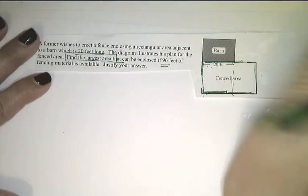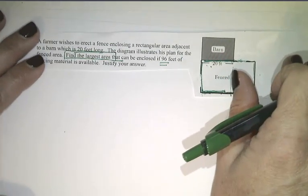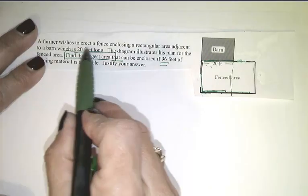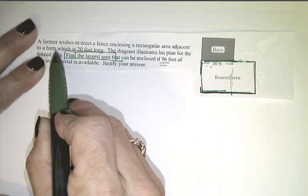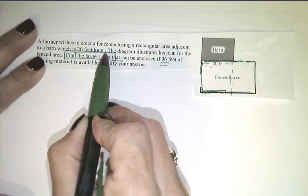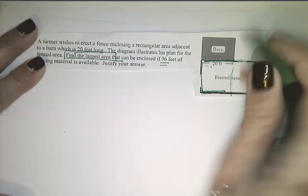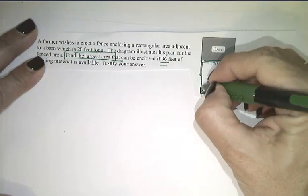So the first thing I'm going to do is stop and look at that first sentence again. A farmer wishes to erect a fence enclosing a rectangular area adjacent to a barn which is 20 feet long. Stop. Now, if you didn't have the picture, then I'd want you to try to draw that, but I gave you one, so that'll help along this first example.